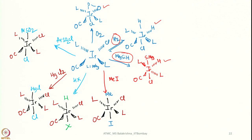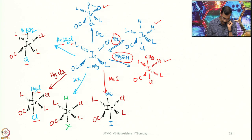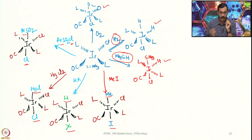Now look at the other four reactions here. To differentiate the chloride ligand coming from the substrate molecule versus the one already present, I have given different colours. This one is coming here and this one is coming here — that means they are added in trans positions on the iridium moiety. Mercury chloride follows the same pattern, and hydrogen halide also goes to opposite ends, as does methyl iodide.